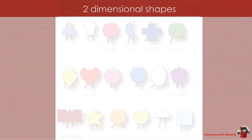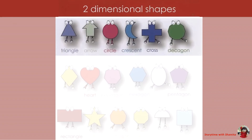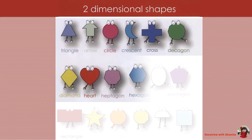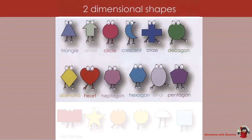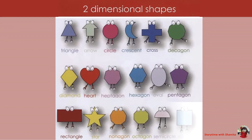Two dimensional shapes: triangle, arrow, circle, crescent, cross, decagon, diamond, heart, heptagon, hexagon, oval, rectangle, star, nonagon, octagon, semicircle, and square.